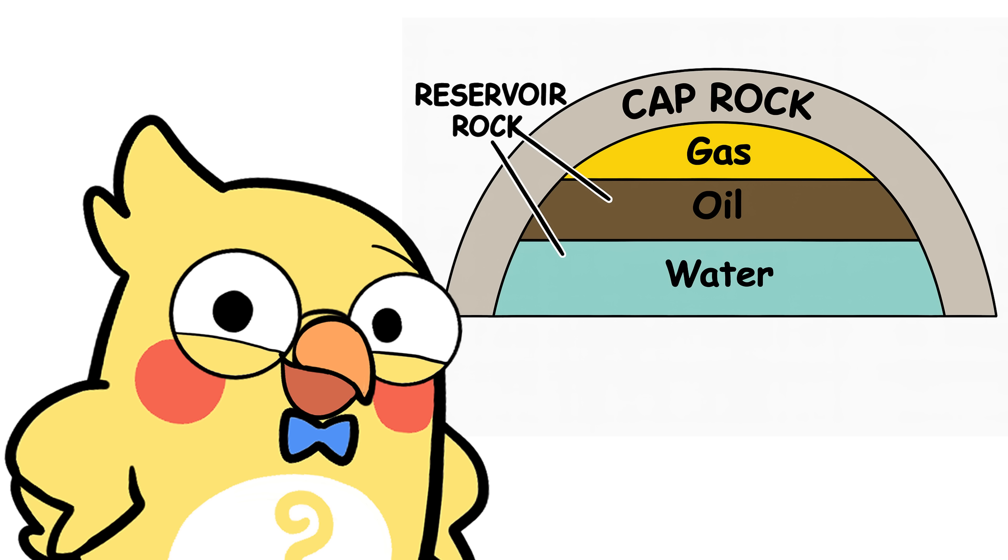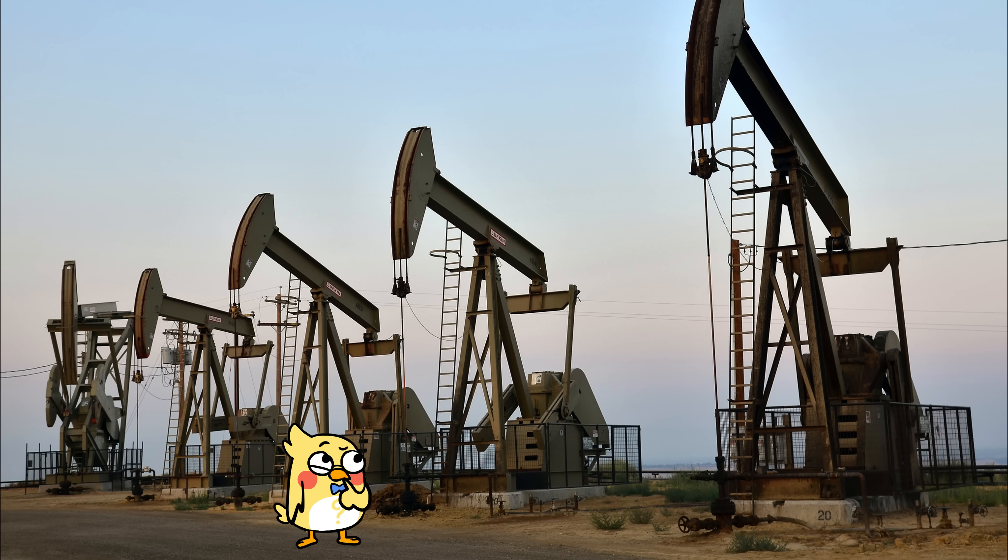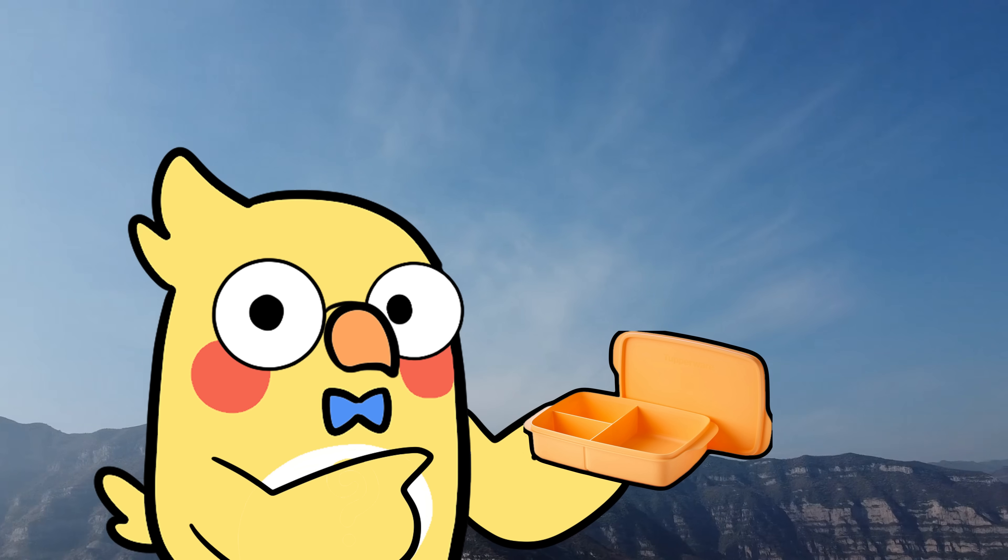Picture this. You've got an underground sponge, the reservoir rock, and on top of it, a plastic wrap, the cap rock. Oil and gas get stuck underneath and hang out there until humans come poking around with billion-dollar drills. It's nature's version of Tupperware.